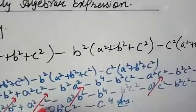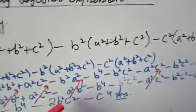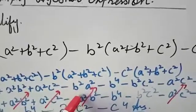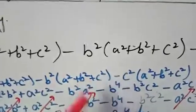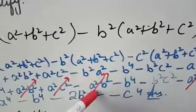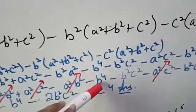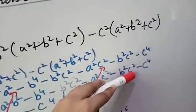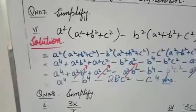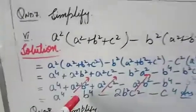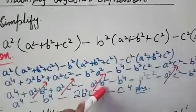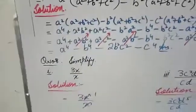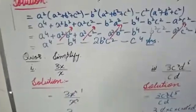After arranging: you have a⁴, then a²b², a²c². Then from the b² multiplication: minus a²b², minus b⁴, minus b²c². From c²: minus a²c², minus b²c², minus c⁴. Now notice: a²b² appears with a positive sign and also with a negative sign — they cancel each other.